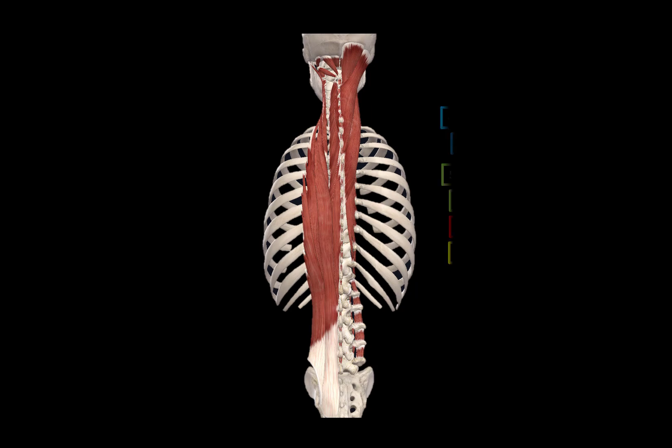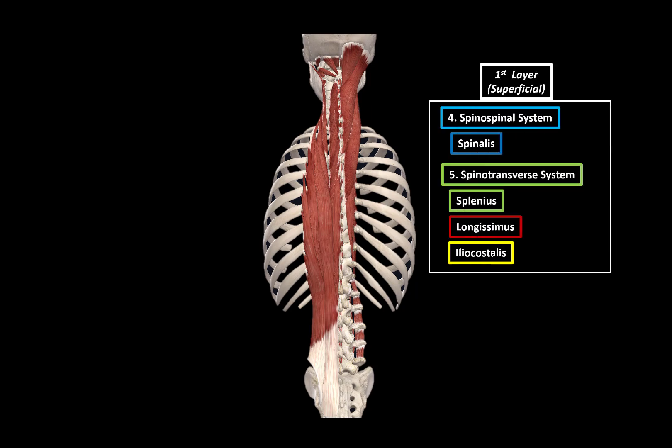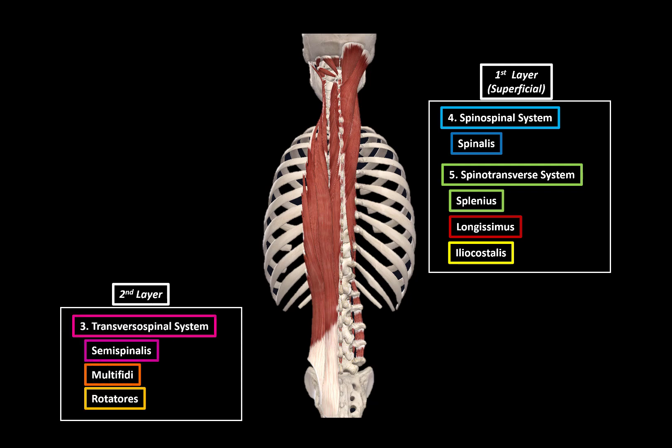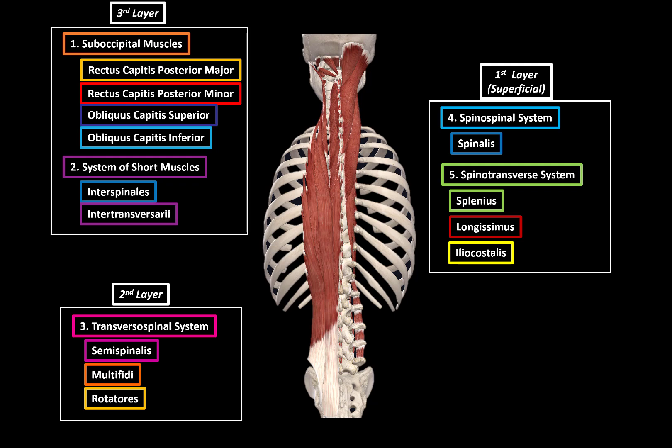So that was all the deep muscles of the back. We've covered the spinospinal system and the spinotransverse system, which are part of the first layer. We've gone through the transversospinal system, which is the second layer, except the short muscle fibers of the rotatores, which are part of the third layer. And we've gone through the suboccipital muscles and the system of short muscles, which are the third and deepest layer. And that, my friends, are the deep muscles of the back.